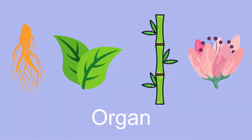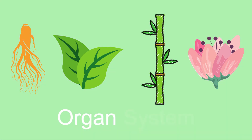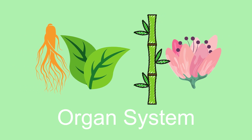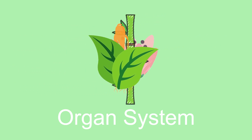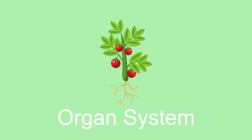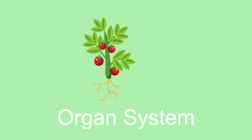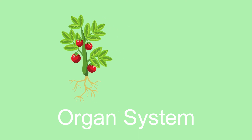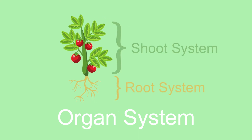An organ system is a higher level of organization that consists of functionally related organs. Plants have two distinct organ systems: the root system and the shoot system.